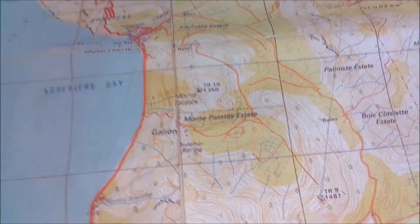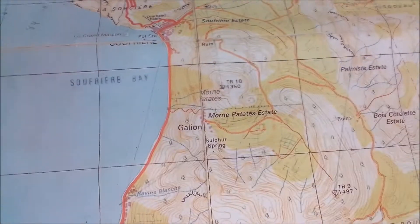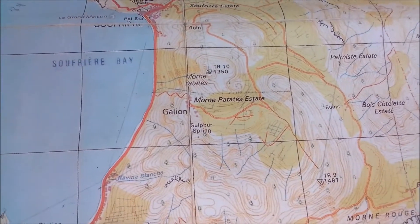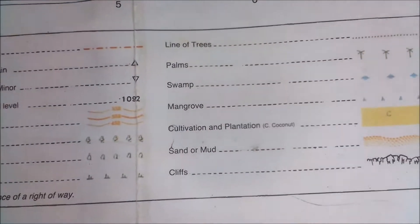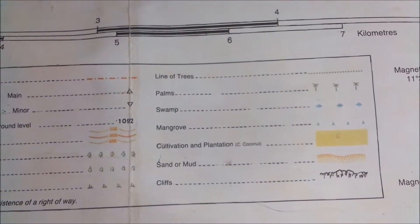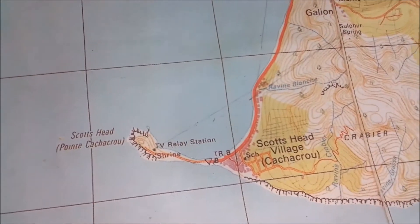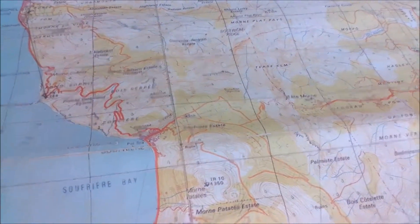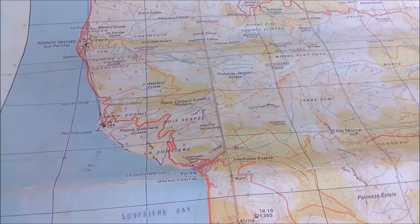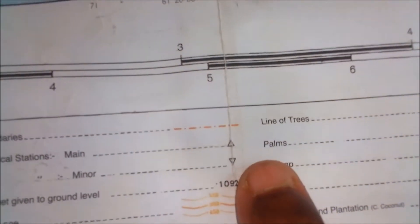On a map, we also look for vegetation. Vegetation is divided into two groups: cultivated vegetation and natural vegetation. Cultivated vegetation is that which is planted as a result of agriculture — crops like bananas and other food items grown on farms and sold. Natural vegetation includes swamps, mangroves, forest, grassland, savannah, and woodland. To identify natural versus cultivated vegetation, you need to look at your key.